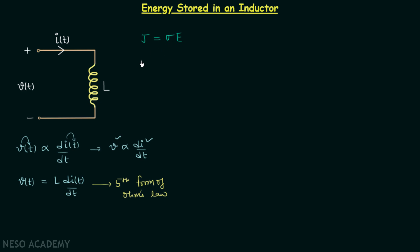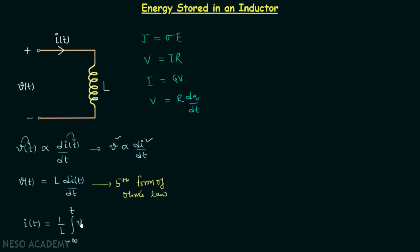The second form is V = IR, the third form is I = GV, and the fourth form is V = R·dq/dt. Now we will derive the current I(t) from the fifth form: I(t) = (1/L)·∫(from −∞ to t) V(t) dt, and this we call the sixth form of Ohm's law.